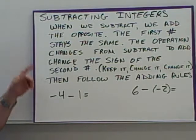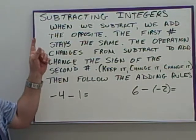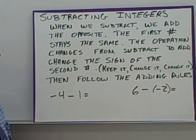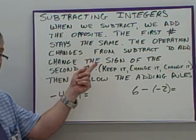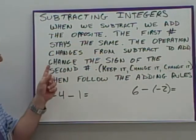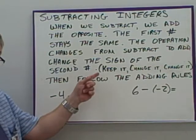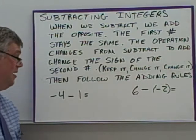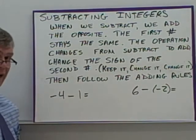Subtraction rules. When subtracting integers, we are actually adding the opposite number. The first number stays the same, the operation changes from subtract to add, and then you change the sign of the second number. You may have heard of keep it, change it, change it. Then you follow the adding rules.